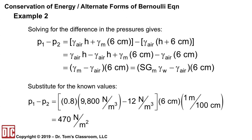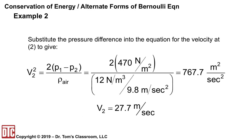Now we put that into the velocity equation: v2 squared equals two times (p1 minus p2) divided by rho-air. Rho-air is gamma-air divided by g, which is 12 divided by 9.8. The units work out to m²/s², and taking the square root gives v2 equals 27.7 m/s.